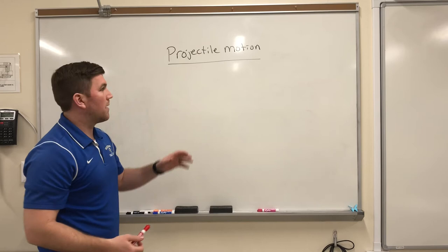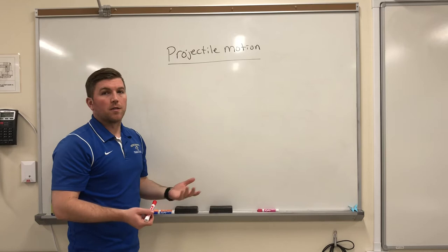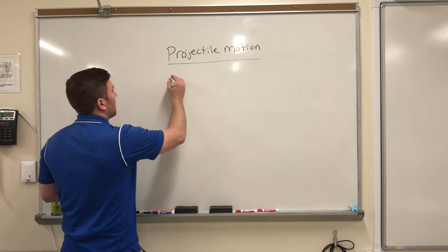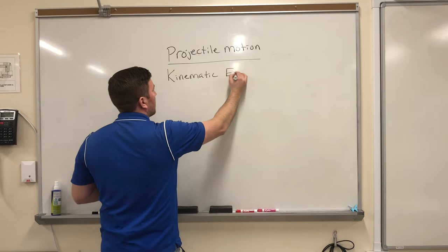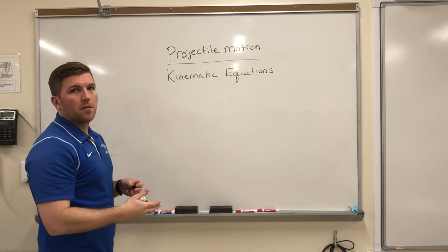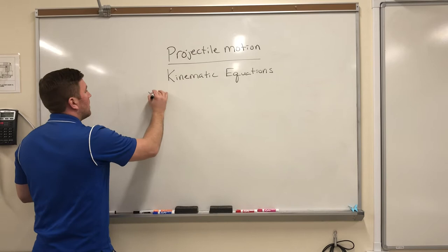You may remember in one-dimensional motion, whether it was vertical or horizontal, we had some equations called the kinematic equations. We're going to have those again, but this time they are two-dimensional equations. So they are still kinematic equations. We're just going to have twice as many of them because you need to account for each direction. So I'm going to put all six on the board, and then I'll talk a little bit about what each one means and when it would be appropriate to use them.